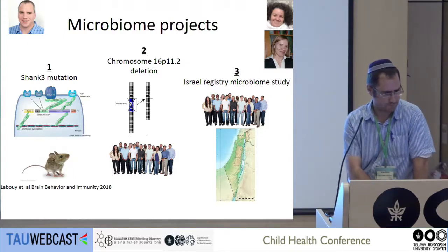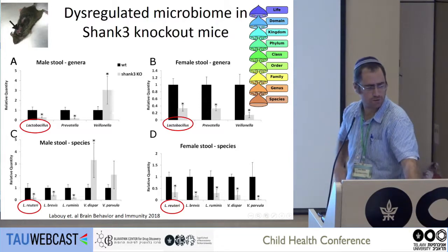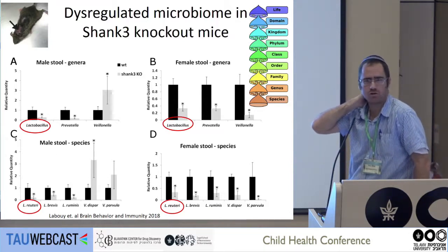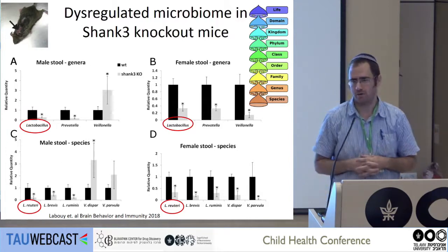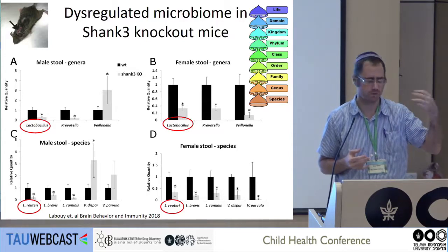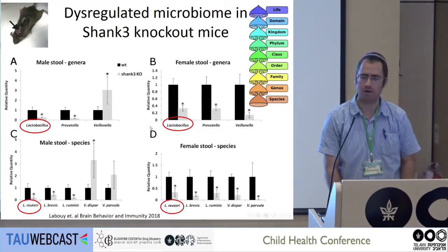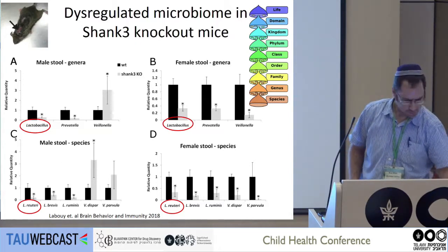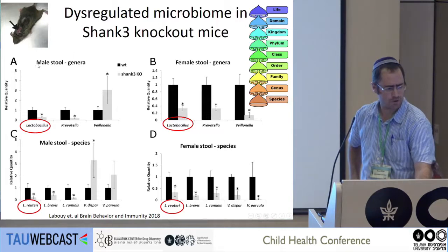On the first project: we took Shank3 mice — mice with a mutation in the gene SHANK3. You can see they have a wound in the back, usually caused by self-mutilation through over-grooming, which is a type of repetitive behavior in mouse models. We first characterized their microbiome to see if this mutation causes any changes. We were actually surprised to find rather large and robust changes in a few different genera of microbiota. The one circled in red is Lactobacillus — a genera of bacteria we found to be decreased in both male and female Shank3 mice. At the species level, one particularly interesting one is Lactobacillus reuteri.